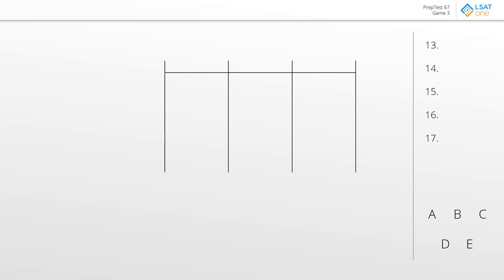We have these three aisles, and they're labeled conveniently one, two, and three. They also clarify which ones are considered lowest and highest, so aisle one is the low side of things. From there, we just have the elements: F, H, M, P, R, and S.